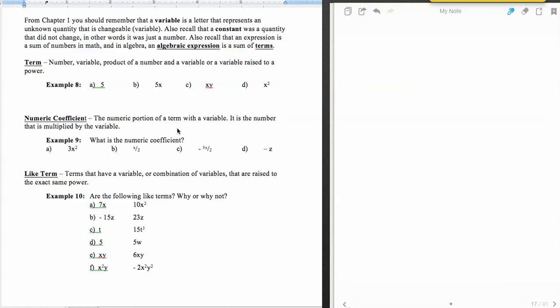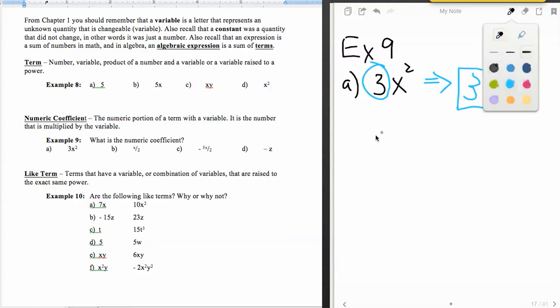Now the next thing we want to talk about is a numeric coefficient. What a numeric coefficient is, is the number that's being multiplied by a variable. So what's the numeric coefficient of each of these? In example nine, the first one, part a, is really easy. 3x squared - the number that's being multiplied by the variable is quite obvious. It's three. So my numeric coefficient is three.